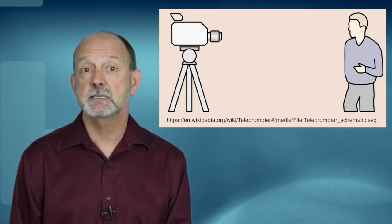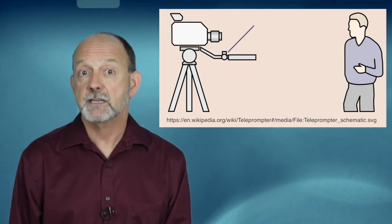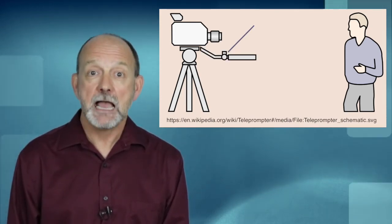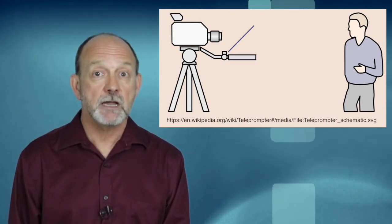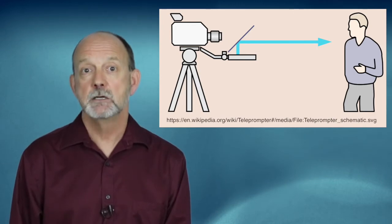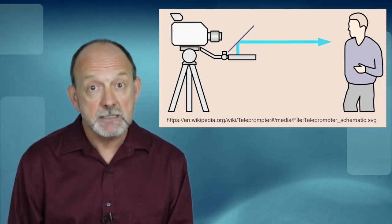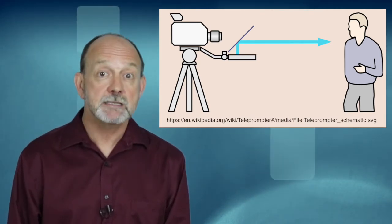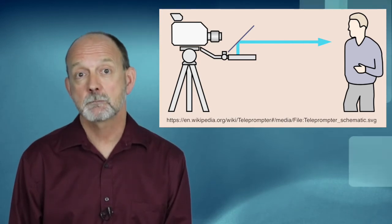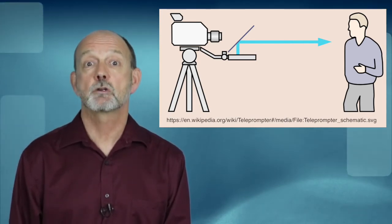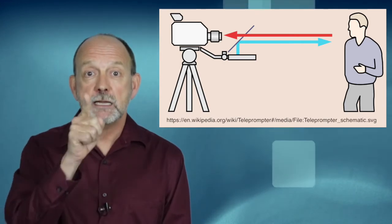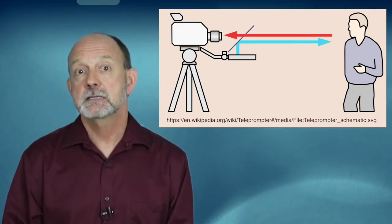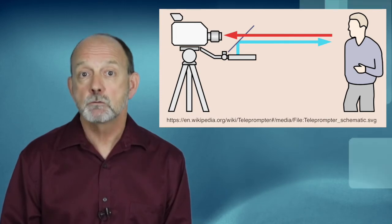In this diagram, you can see the video camera on a tripod like what I have. We add a tray for the tablet and the glass from the picture frame. By angling the glass at 45 degrees, the text on the tablet reflects off the glass and is visible to me, but the text is not captured by the camera. So I can read the text, but it's not seen in the video because the glass is directly in front of the camera. I can look straight into the lens. This is the basic setup for most teleprompters.